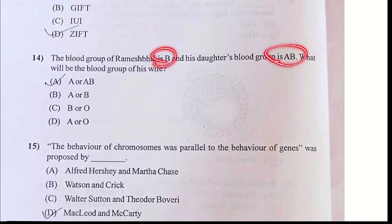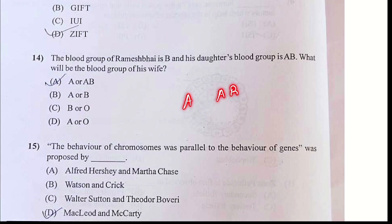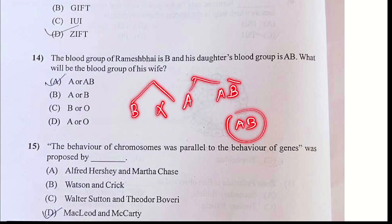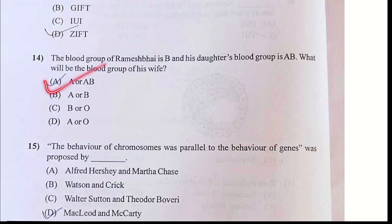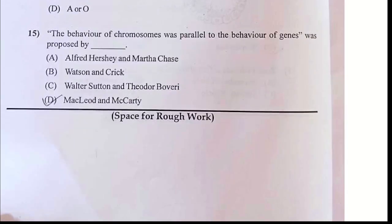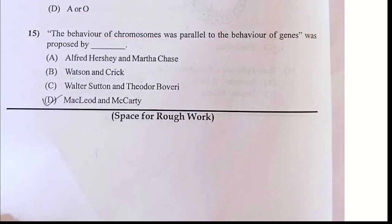B and AB — your answer is either A or AB. A or B crossed with D, then you will get AB group. That is why your answer is A. Behavior of chromosomes and behavior of genes — this is called Sutton and Boveri.